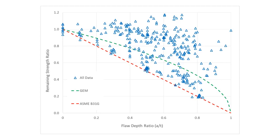Here I have essentially the same plot as in the previous video. On the y-axis we have the remaining strength ratio defined as the failure strength divided by the flow strength, and on the x-axis we have the flaw depth ratio. As before I've got a red dashed line representing the NG18 based equation — specifically the ASME B31G type equation — and a green dashed line representing my new GEM methodology, which predicts a square root relationship with the remaining ligament. One thing to point out is the data from the PRCI report was in a slightly different format. I've re-plotted everything using the new format, which tends to be a little more conservative than the previous work, so please bear that in mind.